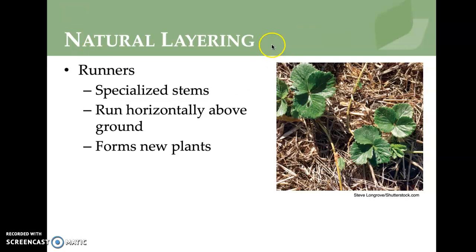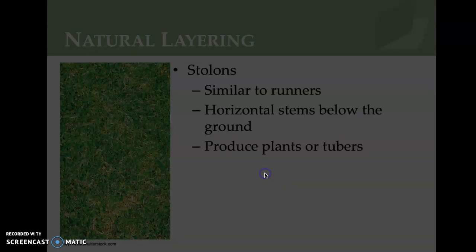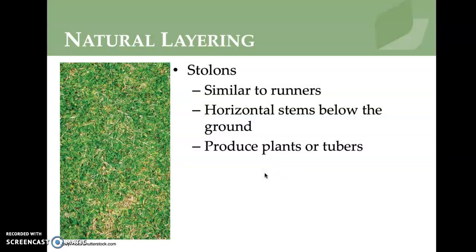By clipping runners, you can create more plants. Stolons are similar to runners — they're horizontal stems below the ground that produce new plants and tubers. If you pull up a blade of grass and get a long string of roots, you'll see multiple grass blades attached.